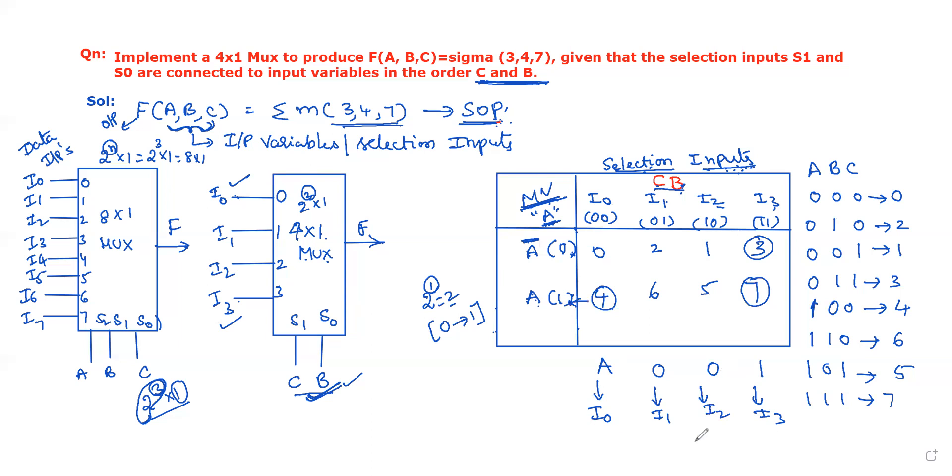We should substitute these values in the block diagram of 4 by 1 multiplexer. So i0 = A, i1 = 0, i2 = 0, and i3 = 1. This is the 4 by 1 multiplexer for the given Boolean function f(A,B,C) = Σm(3,4,7). This is our answer.